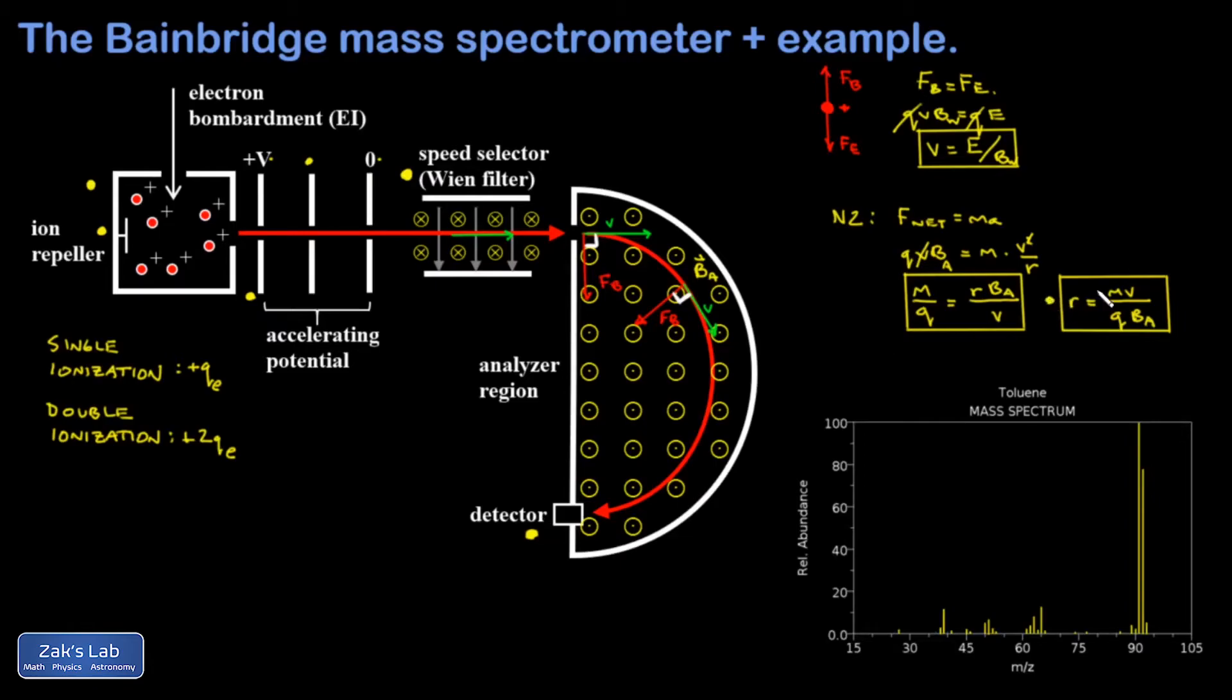Looking at our radius formula, I can see a larger mass would mean a bigger radius of curvature, and our heavier particle would miss the detector. The resolution to these questions is that we have control over the knobs in this experiment. Depending on the design of the mass spectrometer, we might be able to vary the accelerating potential, the speed selector, and the magnetic field in the analyzer region.